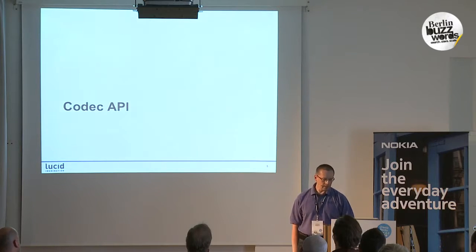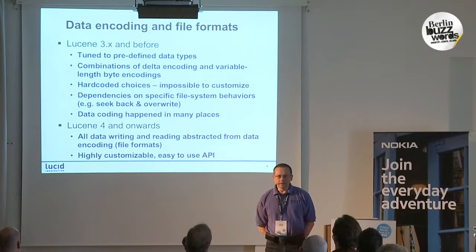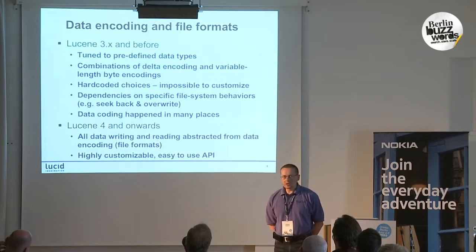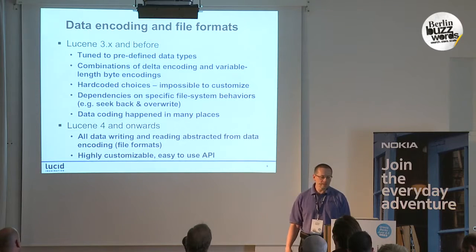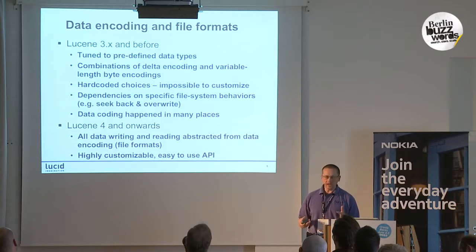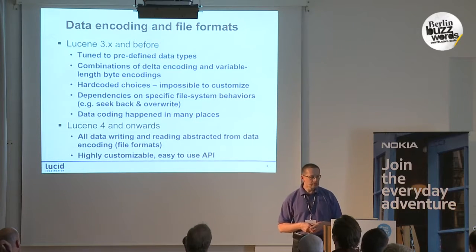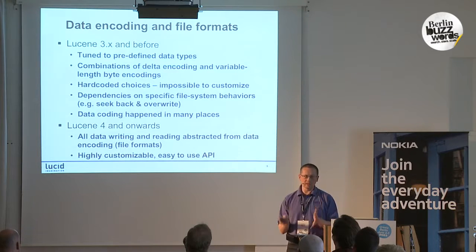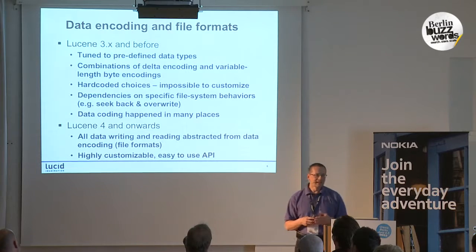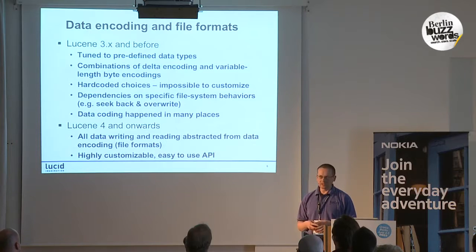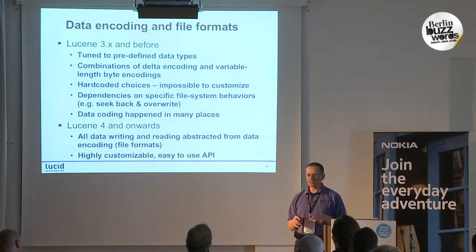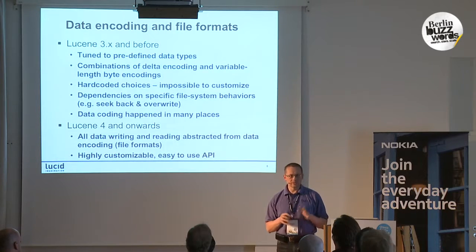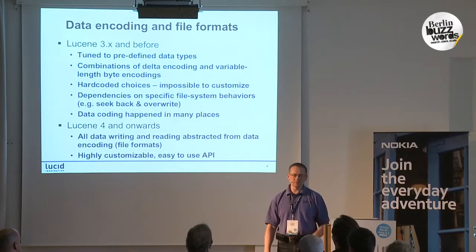The codec API is basically about data encoding and file formats on disk. Sooner or later your indexed data has to hit the disk. In Lucene 3.x and before, this process was more or less hard-coded — there were very few opportunities for customization. The data encoding was fine-tuned for particular data types: postings were delta-encoded and variable-byte-encoded, stored fields were not really optimized, and various tricks were used to minimize on-disk size. But if you wanted to change something, you were out of luck — the changes would be massive and widespread throughout many core classes.